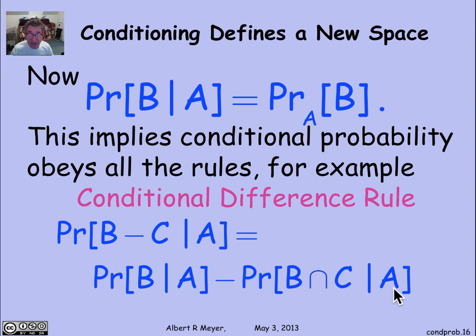It's exactly the same as the standard difference rule, except that I have made everything conditioned on A. And so we automatically get all of these rules for conditional probability that we had holding for probability, which will be helpful. We won't have to think about proving them again.